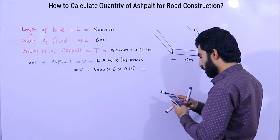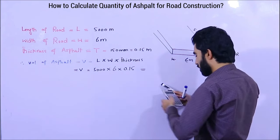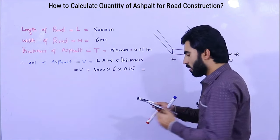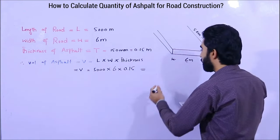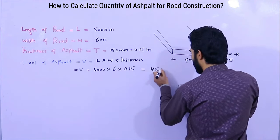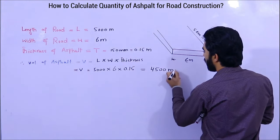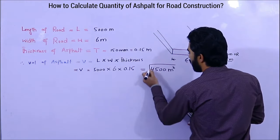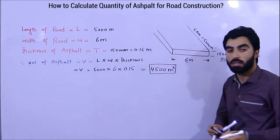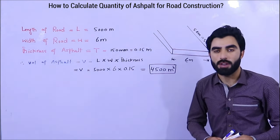5000 × 6 × 0.15 — it will become 4500 cubic meters. So this is the volume of asphalt.